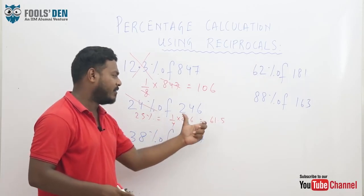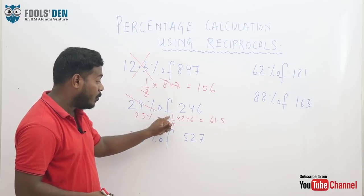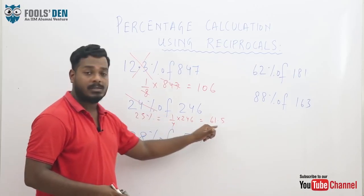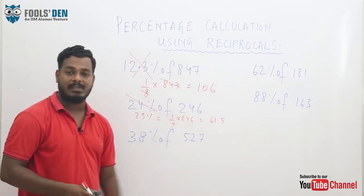The exact value is 61.5. So this percentage we have converted into fraction and solved it. It's time save. Suppose, 38 percent of 527.